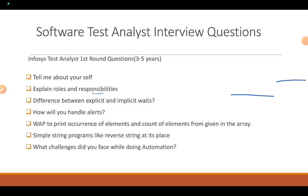In this, explain what your roles are as a manual tester and as an automation tester. As a manual tester, you used to write test cases, execute them, and log defects. For automation, you write test scripts, execute them, and report to stakeholders and share the report.